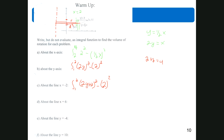For rotation about the line x equals 6, which is way over here, the large radius goes from 2 to 6, so it's just 4. The small radius is the distance from x equals 6 to my equation: 6 minus 2y. So the integral from 1 to 2 is 4² minus (6 - 2y)².